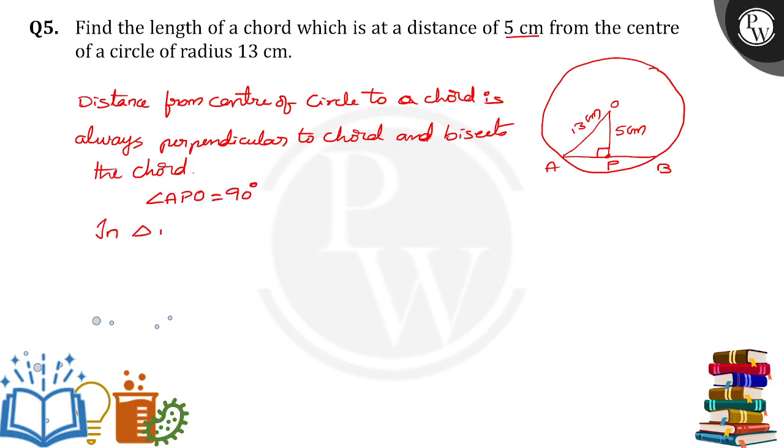So here in triangle APO, we can apply Pythagoras theorem. So we get OA square is equal to AP square plus OP square. So 13 square is equal to AP square plus 5 square.